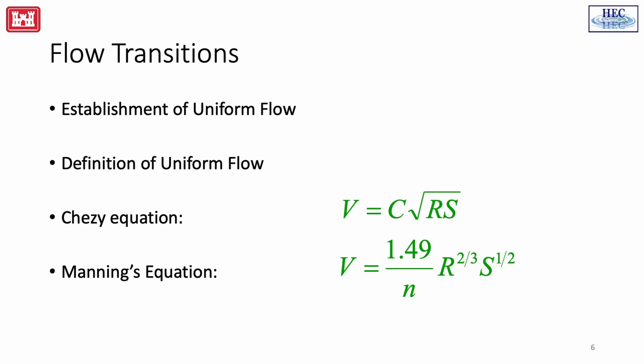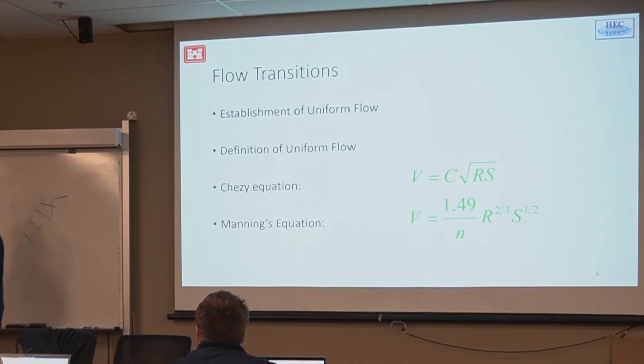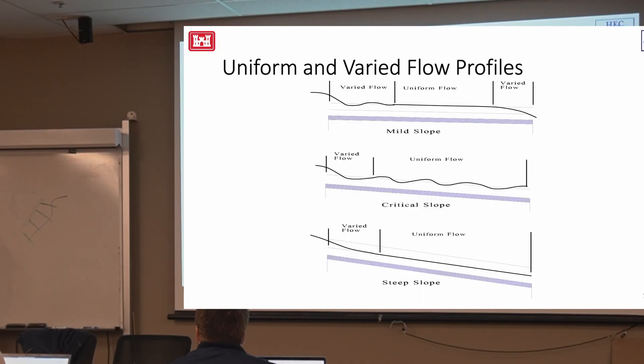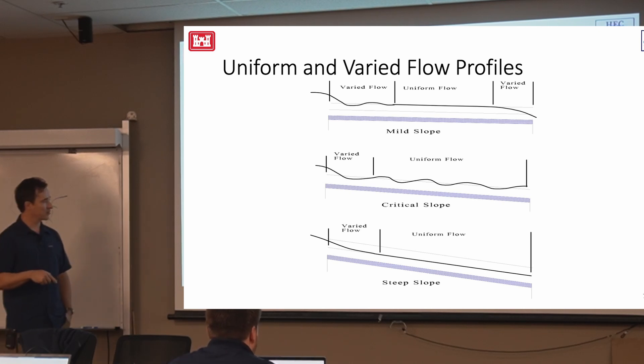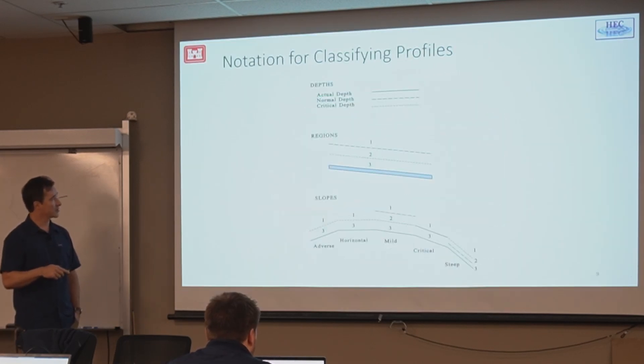We talked about that. In RAS, we usually use the Manning's roughness coefficient, but you can use the roughness height as well. And we talked a little bit about this yesterday, the differences between mild slope, critical slope, steep slope. I'm not going to cover that too much today.